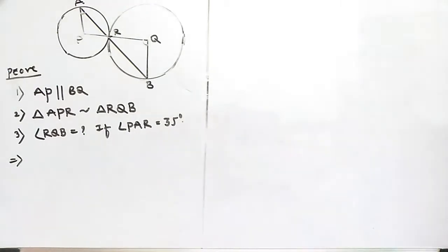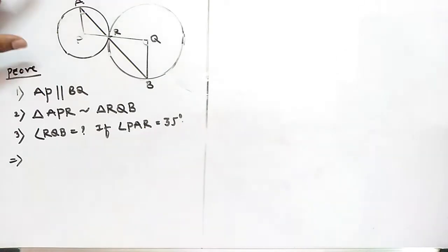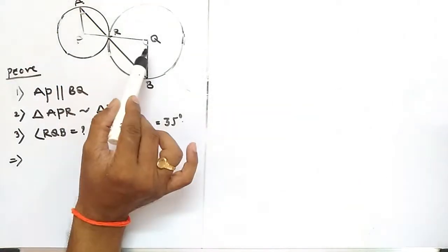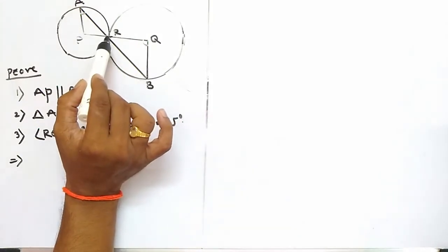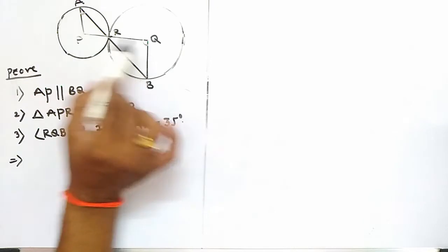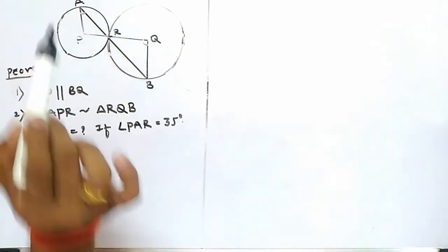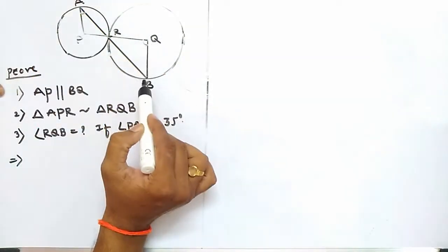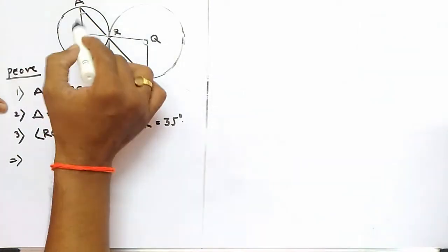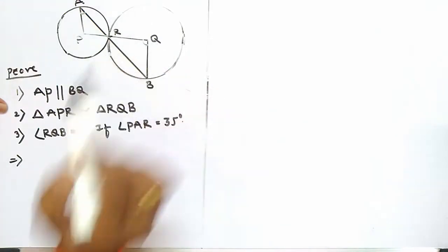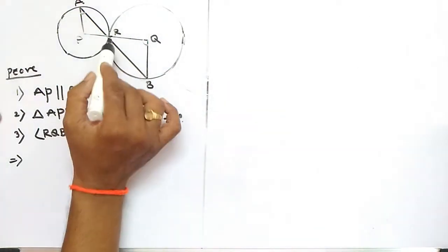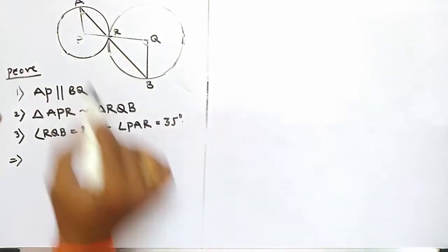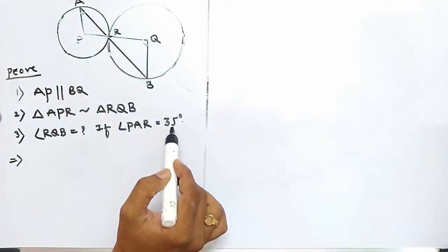Today we are going to learn one example from exercise 3.2, in this chapter on circles. In this example, two circles are touching each other at point R. The line segment PQ is passing through the common point R. We have to show: first, that AP is parallel to BQ; second, that triangle PAR is similar to triangle RQB; and third, find angle RQB if angle PAR is equal to 35 degrees.